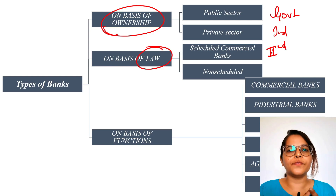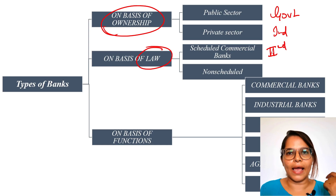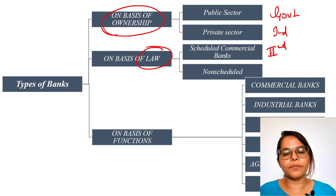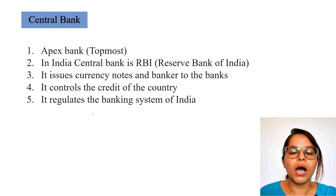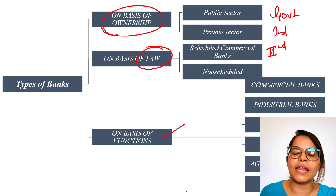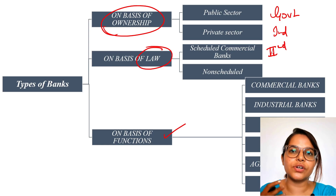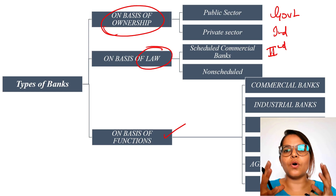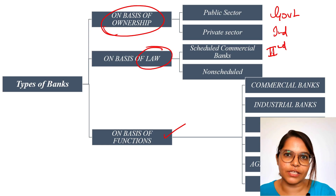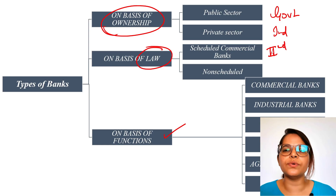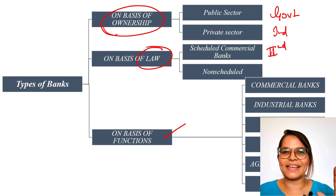I hope you have understood at least four types of banks in this short video. On the basis of law, we classify banks into scheduled and non-scheduled; on the basis of ownership, we have public and private sector banks. In the next video, we'll discuss other types of banks based on functions — commercial banks, industrial banks, savings banks, central banks, agricultural banks, regional rural banks, etc. Make sure you watch the next video, stay tuned, and mention any comments or doubts in the comment section below.